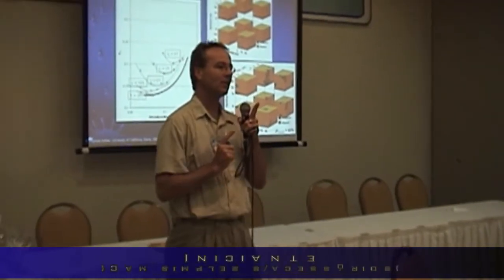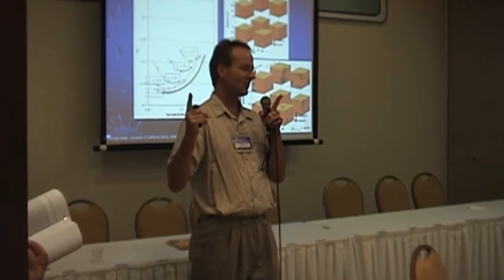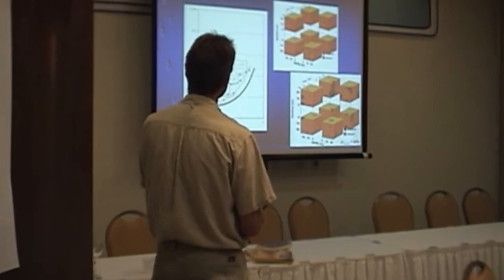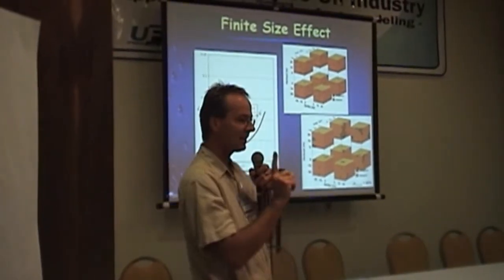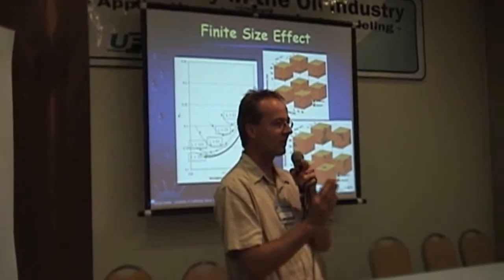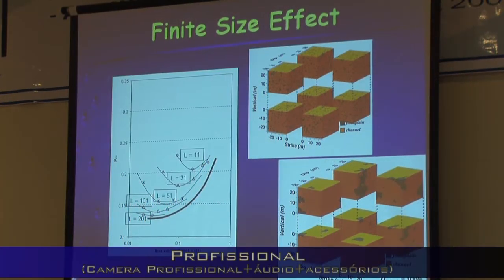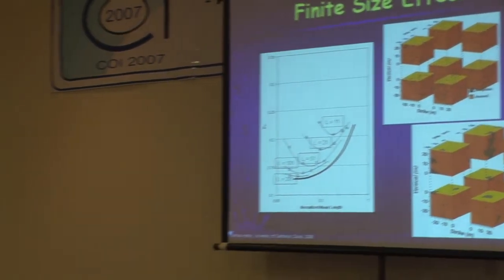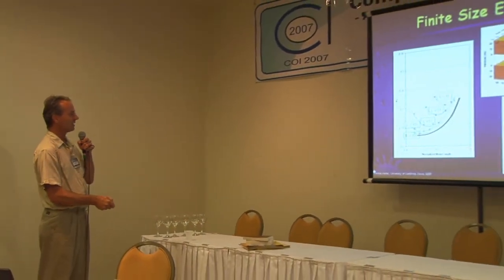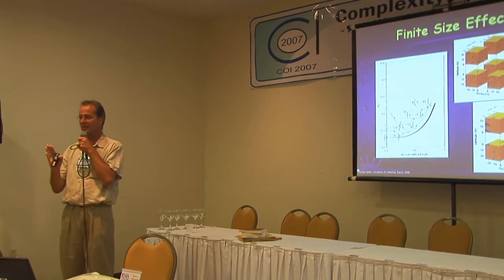In terms of the mean length, our field is actually limited to 20 mean lengths. That's a typical simulation — somewhere between 10 and 20 mean lengths. If I have a finite field like that, I'm plotting the normalized mean length here, where the normalized mean length is the actual mean length divided by the domain size.